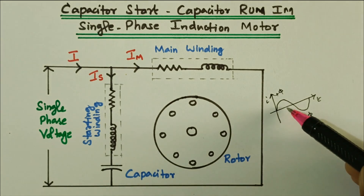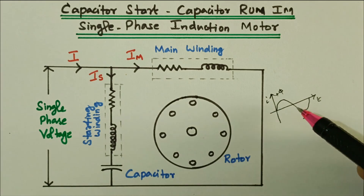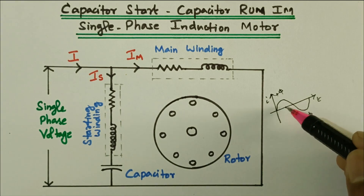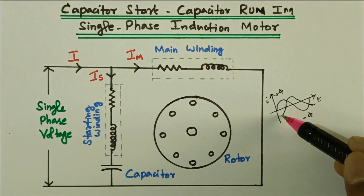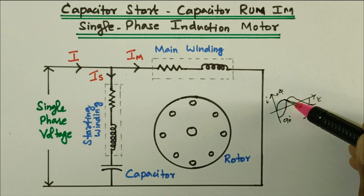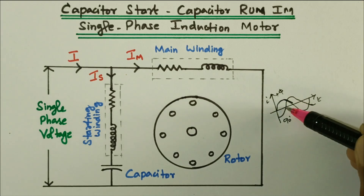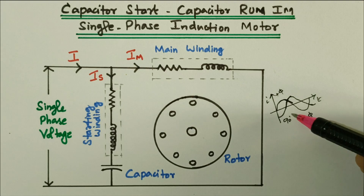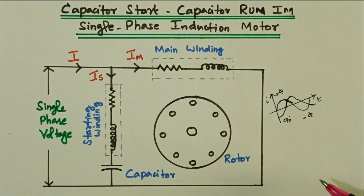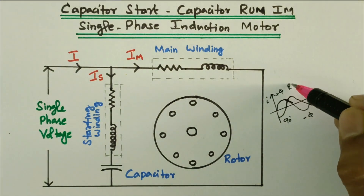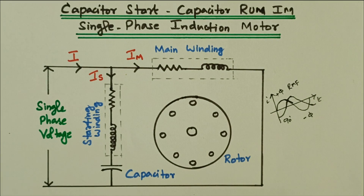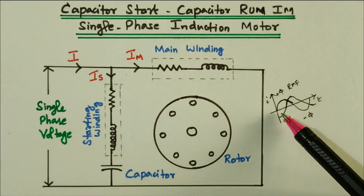By using only one phase, due to the positive and negative cycles, the net flux is zero. That is why we use two windings with a phase difference between the currents. If the phase difference is approximately 90 degrees, when current in one winding is decreasing, the flux decreases, but the current in the second winding starts increasing. Because of this phase difference, one current is always increasing while the other decreases, so the net flux is always available and the revolving magnetic field (RMF) is created.